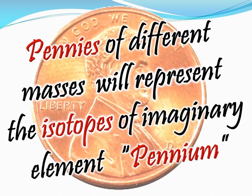Pennies of different masses will represent isotopes of an imaginary element we're going to call pennium. On the periodic table it would have the symbol PE — capital P, lowercase e. This is a macroscopic element, meaning we can actually hold the atoms in our hands and measure them on a balance — a great analogy for the microscopic atoms we can't even see or grab. You see where this is going?